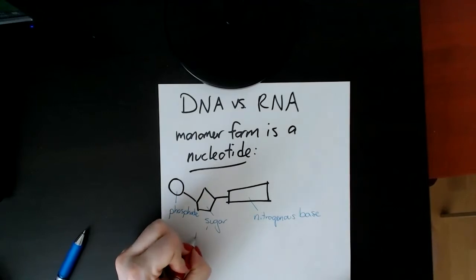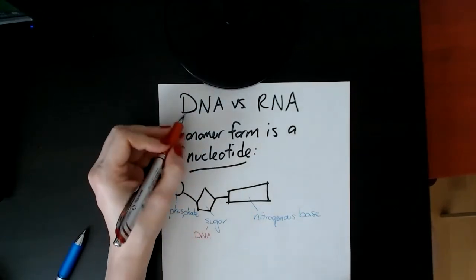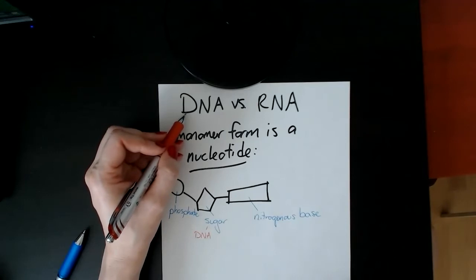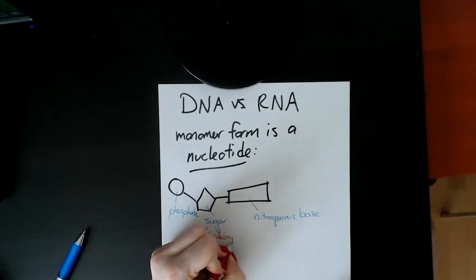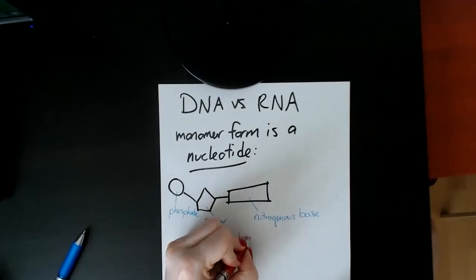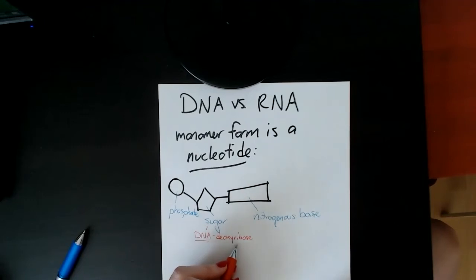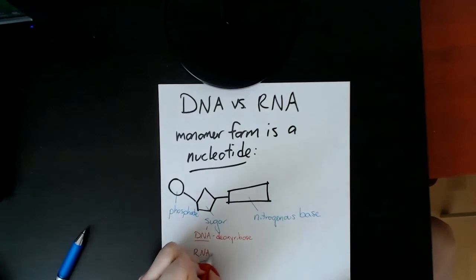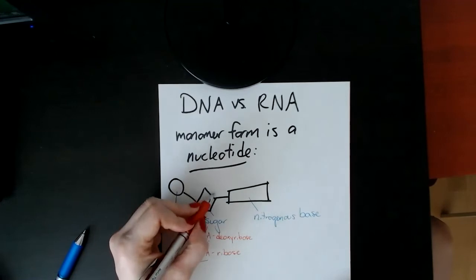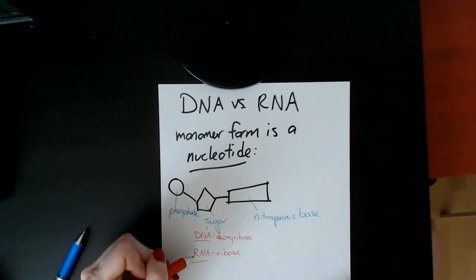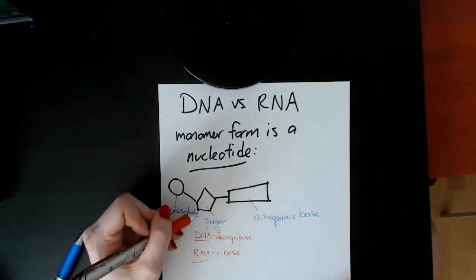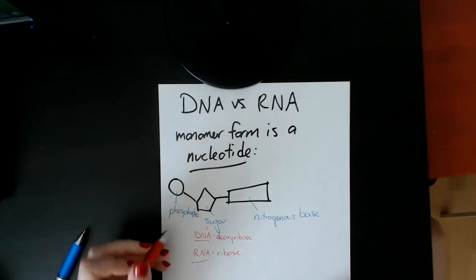The sugar in DNA — if you know what DNA stands for, it's deoxyribonucleic acid. So in DNA, the sugar is a deoxyribose, which means it's missing one oxygen. In RNA, which stands for ribonucleic acid, the sugar is called a ribose sugar. They're both five-member rings, and the only difference is RNA has an oxygen that DNA doesn't — a little OH group.